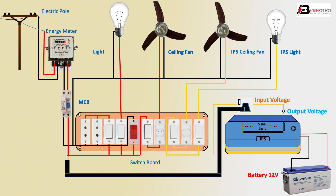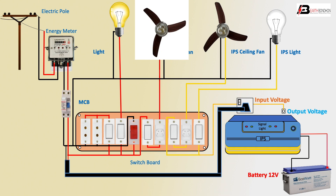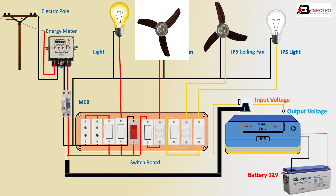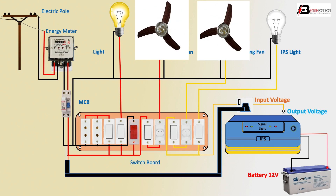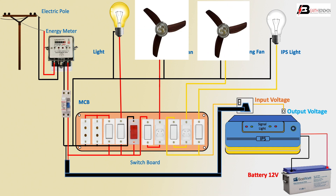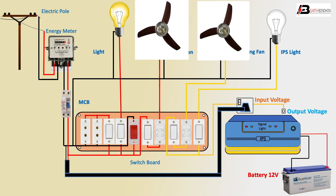Now testing: normal light on — light on; switch off — light off. Ceiling fan on — ceiling fan on. Dimmer high — ceiling fan high; dimmer low — ceiling fan low; switch off — ceiling fan off. Now IPS ceiling fan condition: ceiling fan on — ceiling fan on. Dimmer high — ceiling fan high.